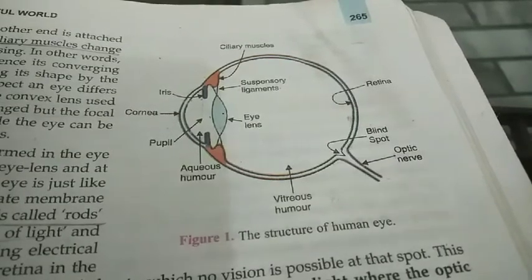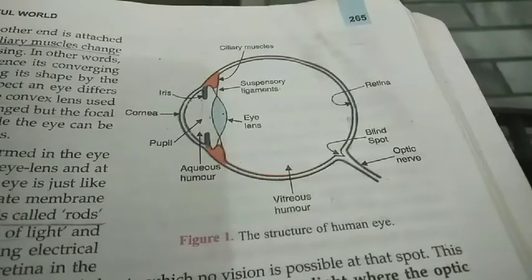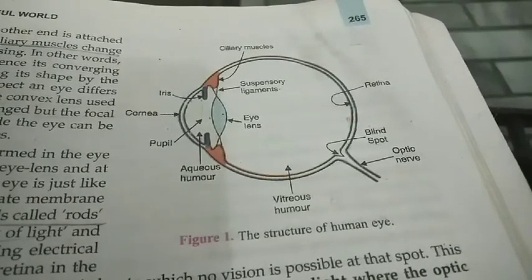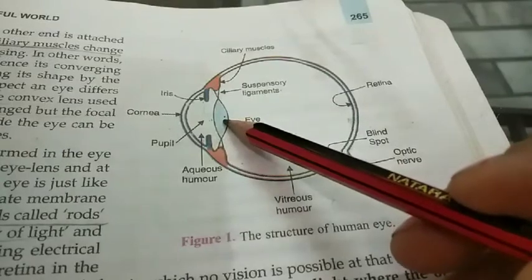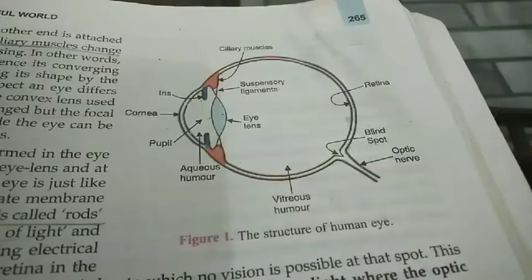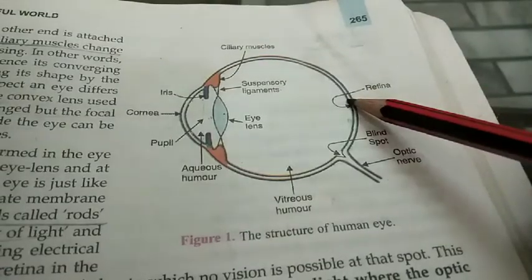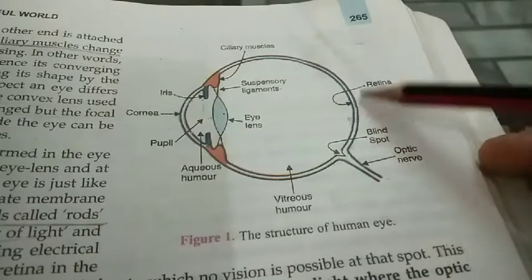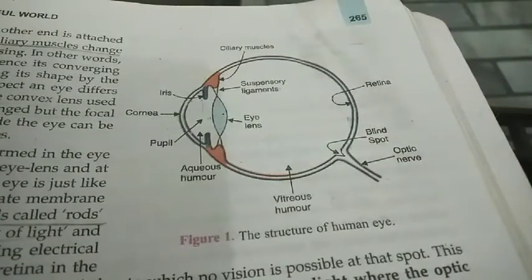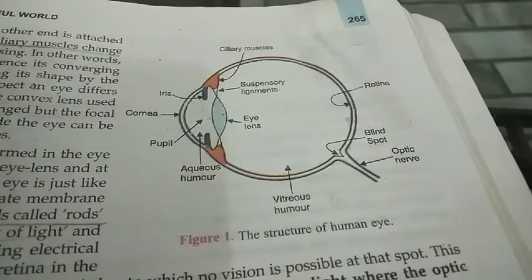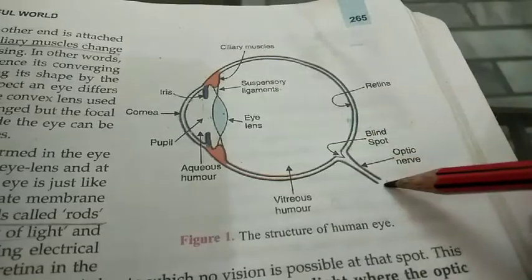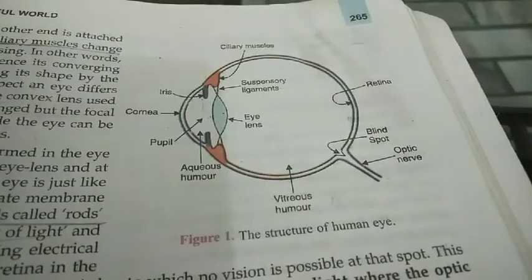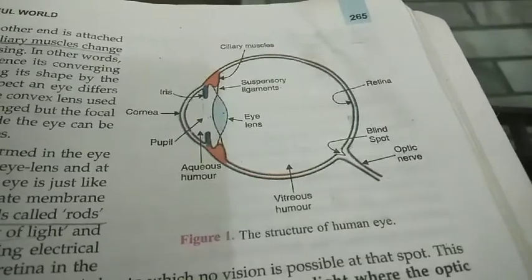Next we have to discuss the working of the eye. When we look towards an object, light from the object enters the pupil of the eye and falls on the lens. The eye lens forms a real and inverted image on the retina of the eye. The retina contains special cells in the shape of rods and cones. These cells convert light energy into electrical signals, and these electrical signals are carried to the brain through optic nerves. The brain finally interprets the signal and hence we see the objects.